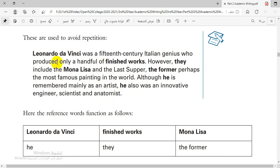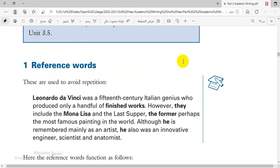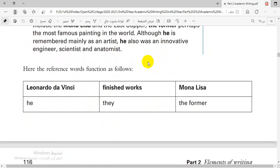This is the text. I'm sure that you have noticed the words that are in bold. So these are the main words and these are the reference words. Let's now discover what is the main words and what is the reference words. Here are reference words functions. Leonardo da Vinci, reference word is he. Finished works, they. The former. So instead of repeating the same word we can replace it with the reference words. Instead of repeating the word Leonardo da Vinci every time we can replace it with the pronoun he. Instead of repeating the two words finished works we replace them with the pronoun they. Mona Lisa replaced by the former.